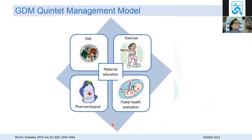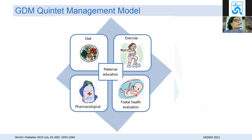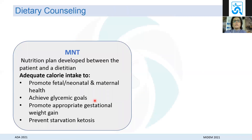For GDM management, there is a quintet management model where maternal education is at the center. The mother needs health literacy about her diabetes, her weight, what she eats, her exercise, what can happen to the baby, and what the therapeutic options are. The goal is to inform and motivate her — not scare her — in an encouraging manner.